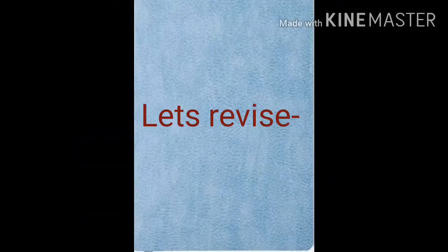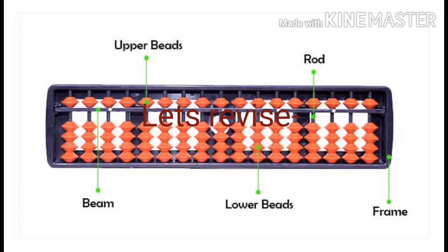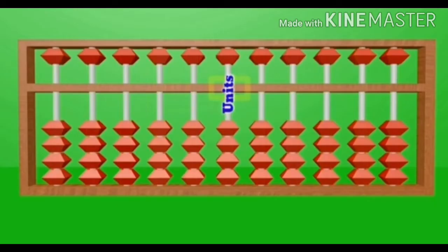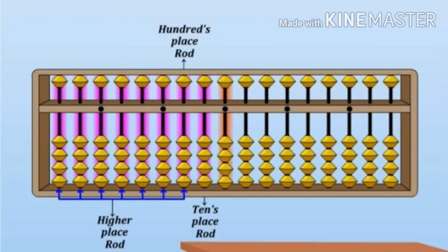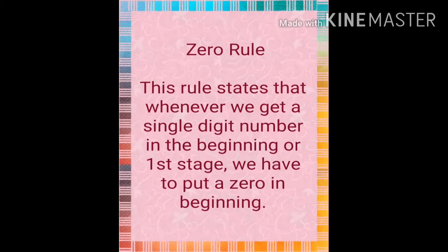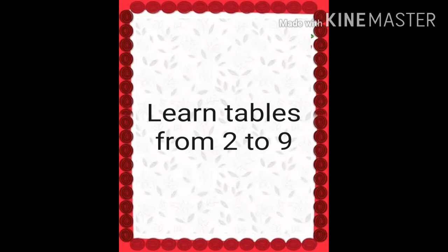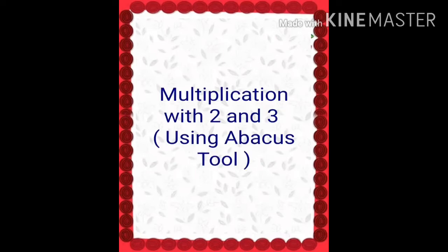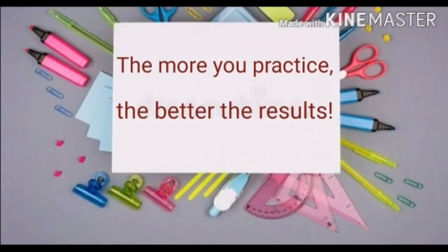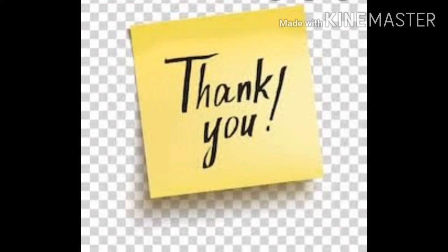Now let's revise what we studied today. First, the parts of the Abacus: frame, lower beads, upper beads, rod, and beam. Then the units rod, tens rod, hundreds rod, and higher places like thousands and lakh. Then the zero rule: when a single digit appears at the beginning, we apply a zero in front. Focus on learning tables from 2 to 9 thoroughly. Our topic was multiplication with 2 and 3 using the Abacus tool. The more you practice, the better the results. A worksheet is provided — please do it in your rough notebook. Thank you.